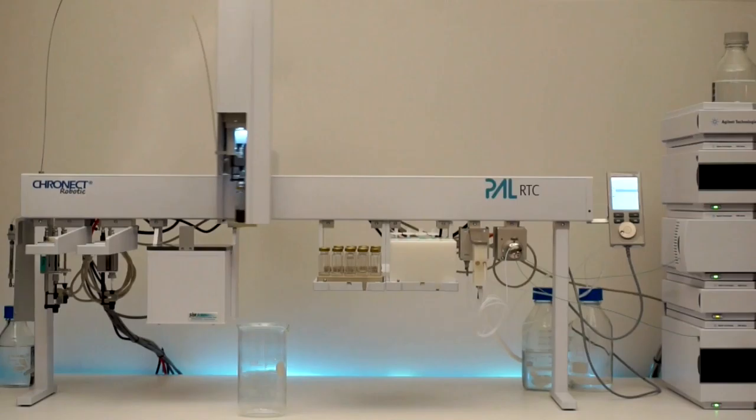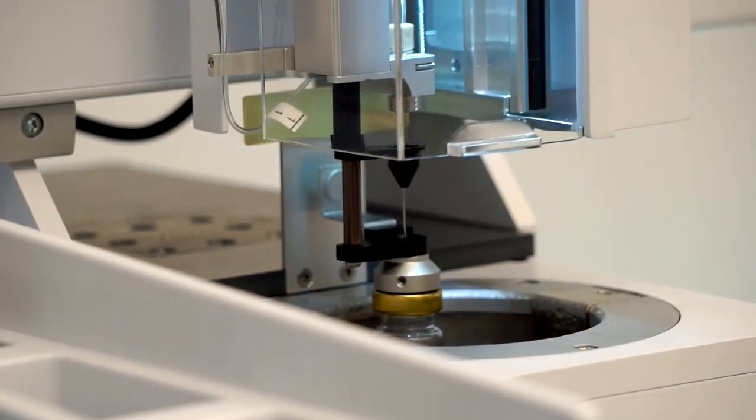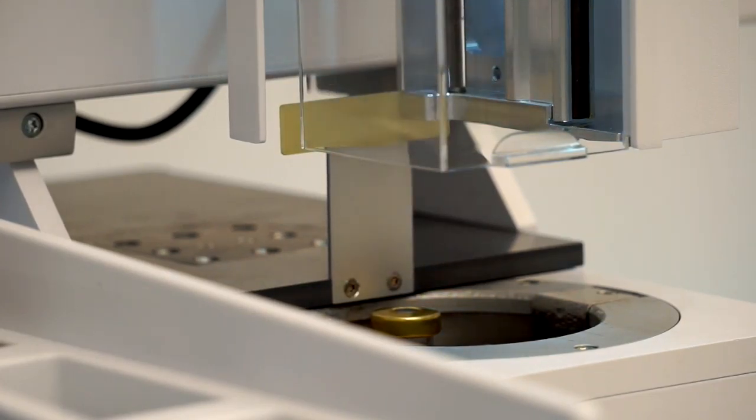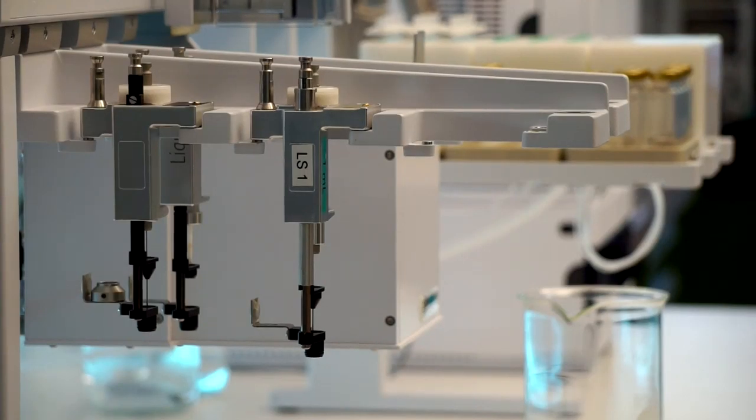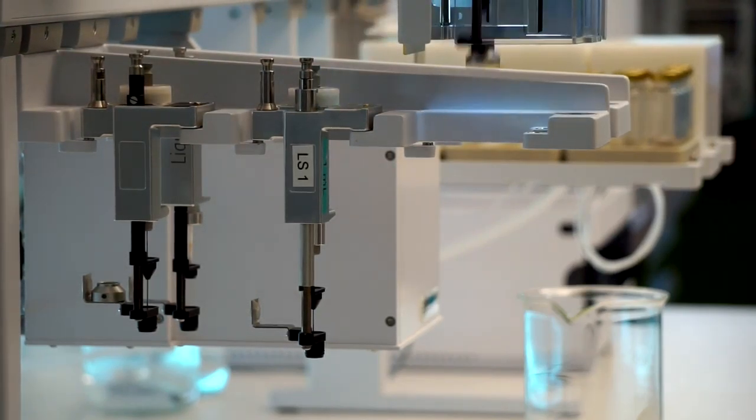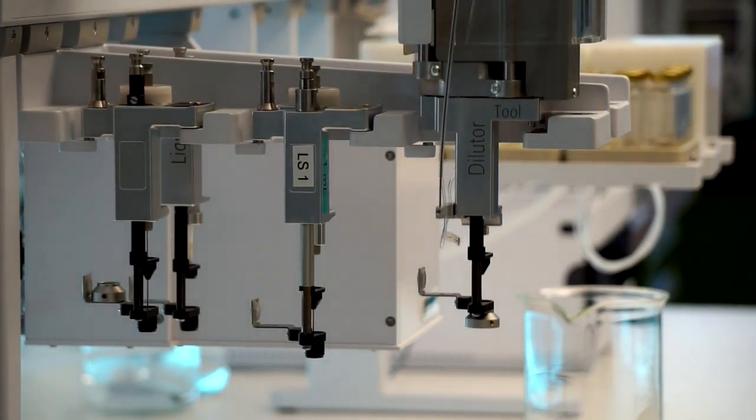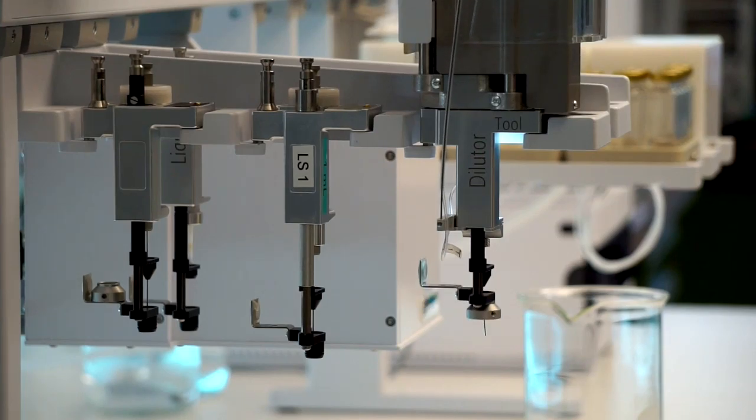The dilutor tool opens the cover of the ultrasonic bath and puts in the sample vial. The ultrasonic bath is turned on. Meanwhile, the tools are exchanged. The 1 ml syringe tool is required to transport the 2 mL sample vials.